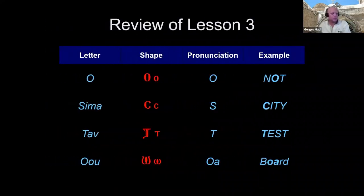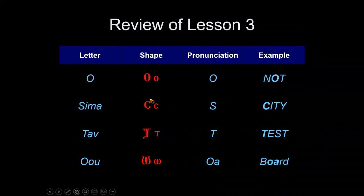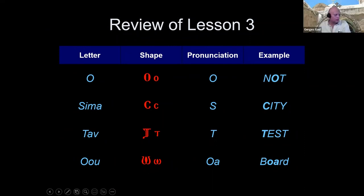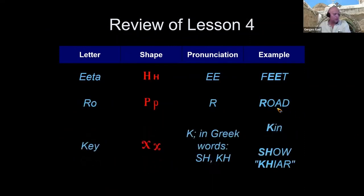Thomas, do you want to do the next one? O is O, Sigma is S, Tav is T, and Omega is OA. Good, Thomas. Thank you. Next, Ahab, do you want to do the next one?